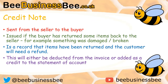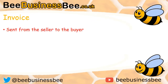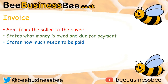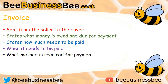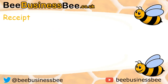The credit note typically gets deducted from the end of the invoice or added to the statement of account. An invoice is usually sent from the seller to the buyer, typically around 30 days after the buyer has received the goods. It states what money is owed and needs paying — how much, when it needs to be paid, and what payment method is required. The invoice amount is the total ordered, less any credit notes that have been provided.